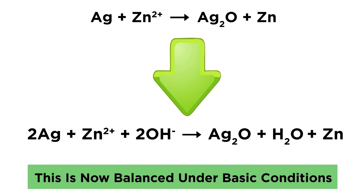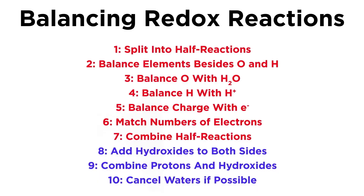We can see that in either case we are involving solvent molecules in order to supply the hydrogens and oxygens necessary for the reaction, and we simply follow a series of steps in order to balance all the components involved. Here is that list of steps summarized one more time, in case you need these instructions for reference, with instructions for acidic conditions listed first, and then the continuation if conditions are basic.